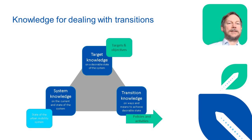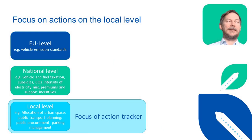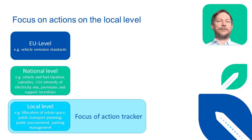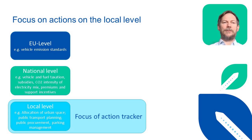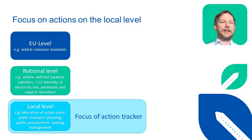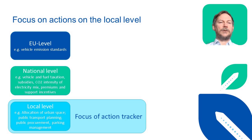Mobility, including e-mobility, is a multi-level policy field. Political decisions that influence the mobility system are taken on different levels. For example, vehicle emission standards are decided at the European level. Taxation is determined mostly at the national level, as are subsidies, premiums, or procurement programs for vehicles. The CO2 intensity of the electricity mix, which is important for the environmental performance of e-mobility, is also determined at the national level. The tracker focuses on the urban and regional level and on the activities of local decision makers which influence e-mobility systems.